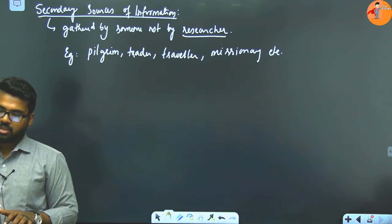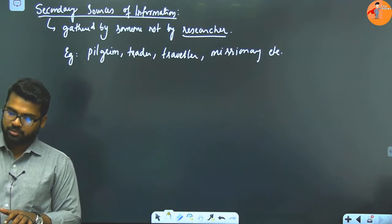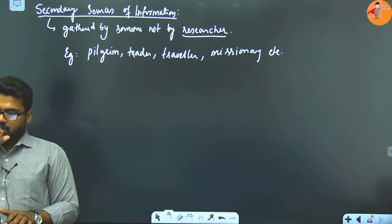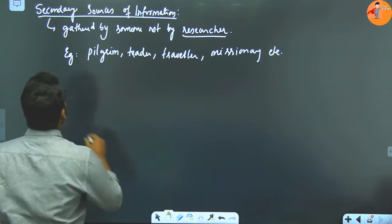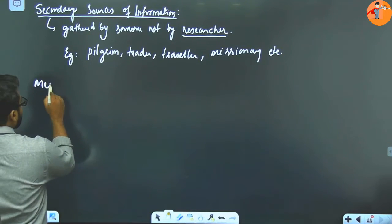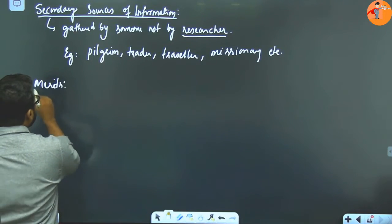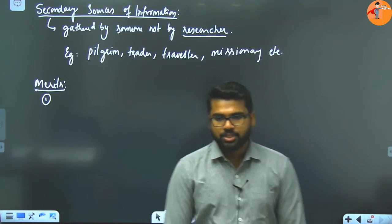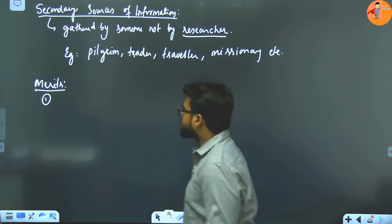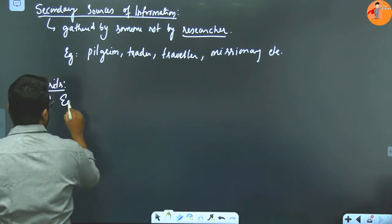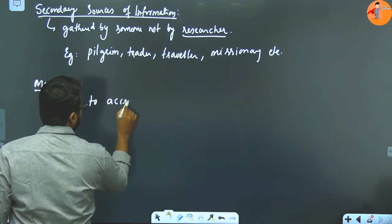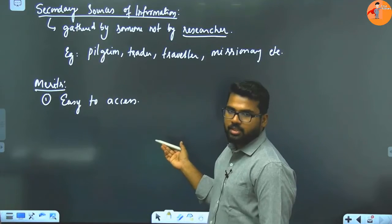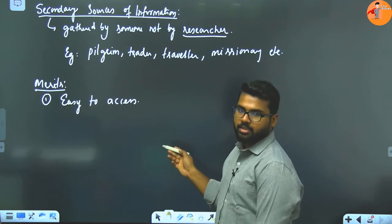Secondary sources of information. Merits likh lijiye. Iska merits kya hai? First, easy to access information. Jyada efforts lagani ki zarurat nahi hai. Because it is already existing. It is already existing, you can get it.